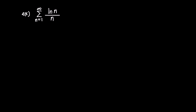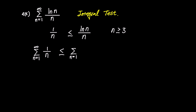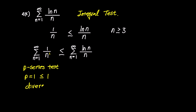Let's consider the infinite sum of ln(n) over n. Since ln(n)/n is greater than or equal to 1/n for n ≥ 3, the infinite sum of 1/n is smaller than or equal to the infinite sum of ln(n)/n. Applying the p-series test to the left-hand side, since p = 1 it diverges. Consequently, the right-hand side, the infinite sum of ln(n)/n, also diverges.